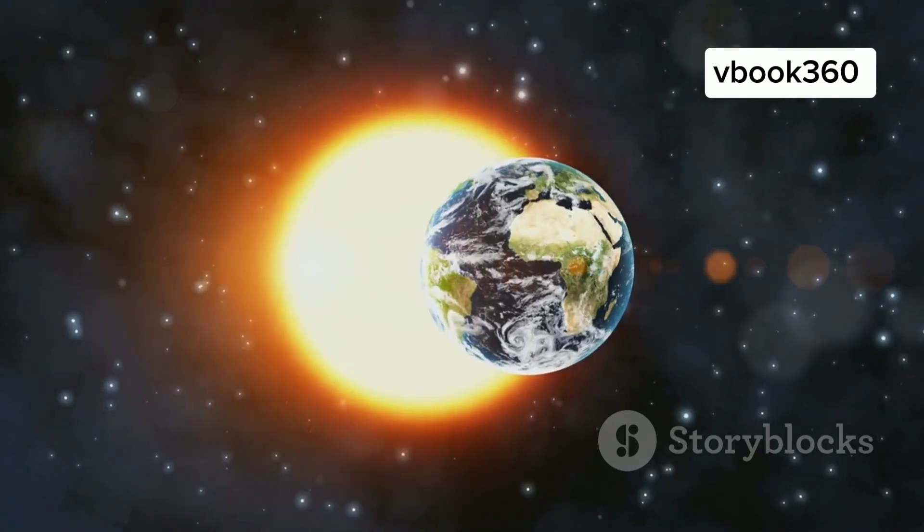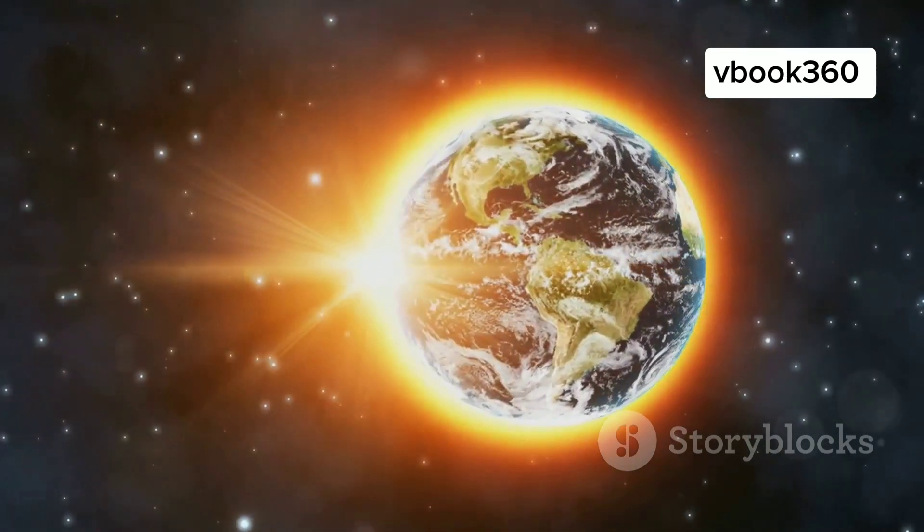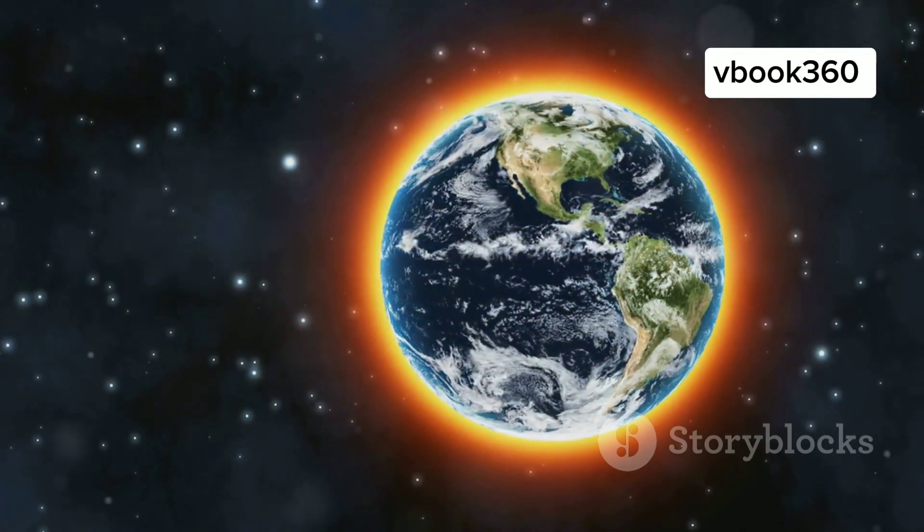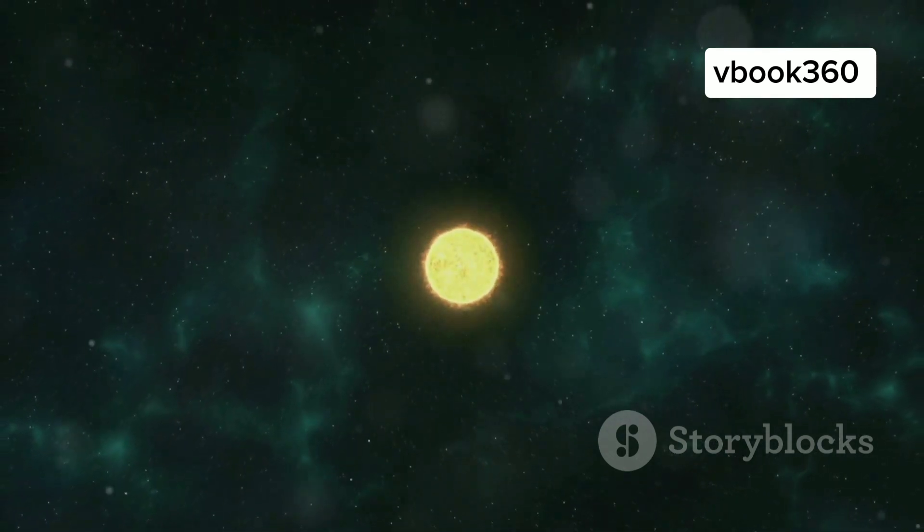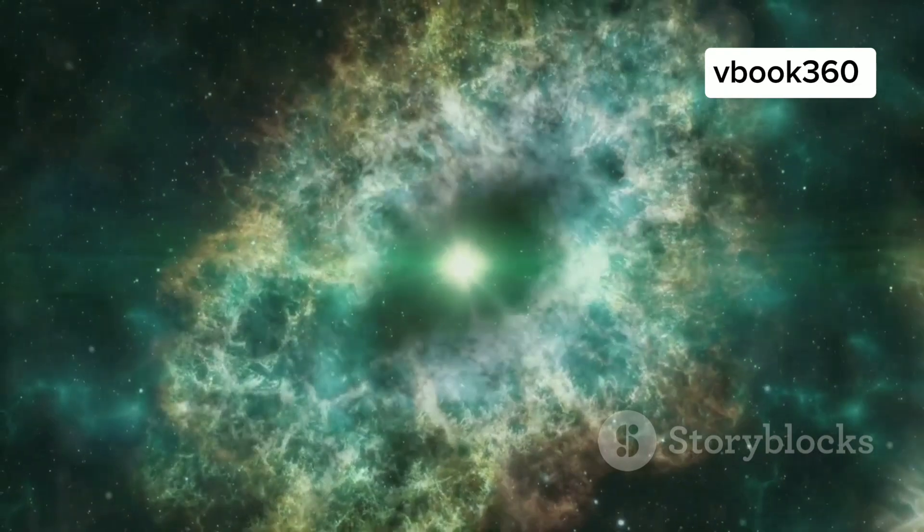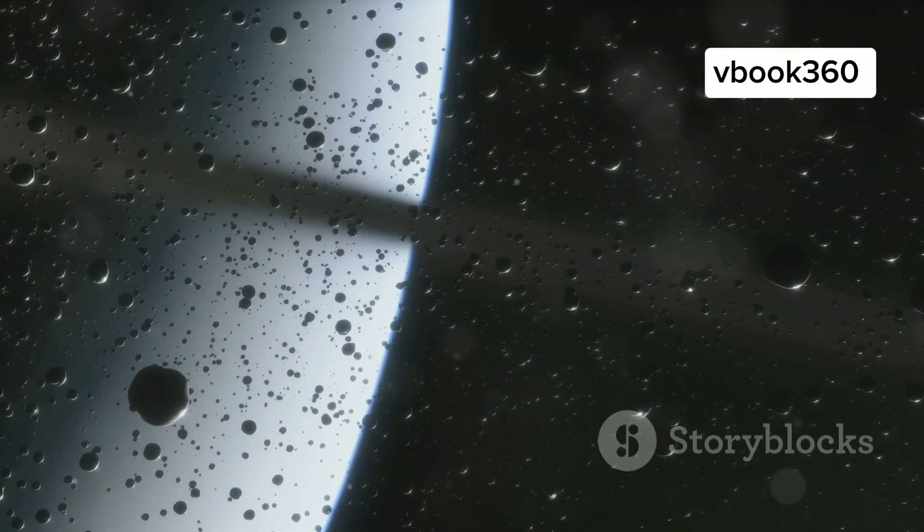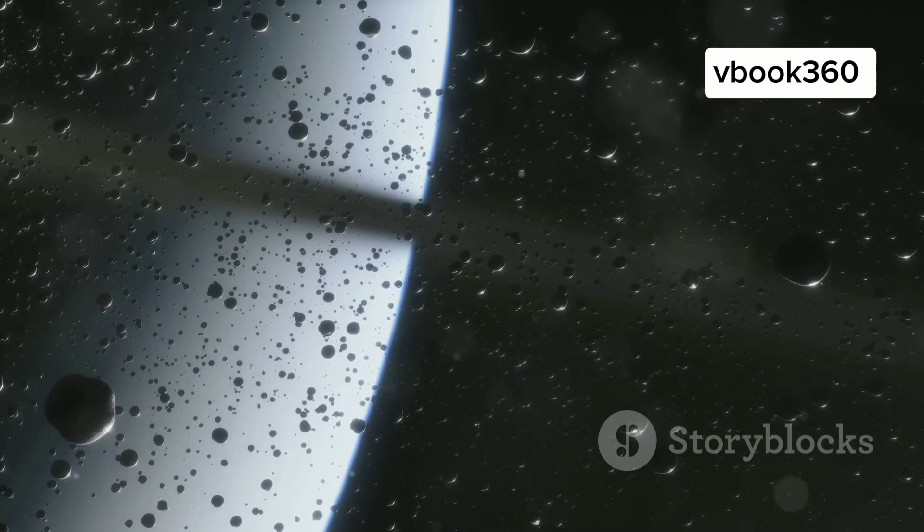One of the most exciting aspects of Earth 2.0 is its orbital period, similar to Earth's year, suggesting it experiences seasons and temperature variations. Its star, while similar in size to our sun, is cooler and less massive, bathing Earth 2.0 in a slightly dimmer light. This difference in stellar radiation could have profound implications for the planet's climate and potential for life.